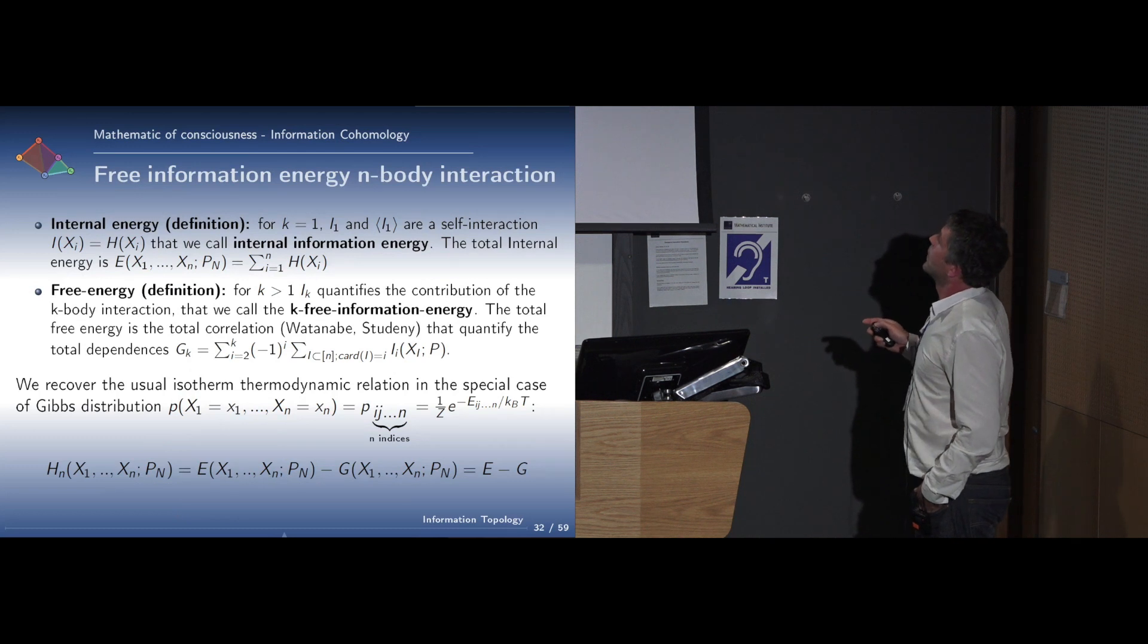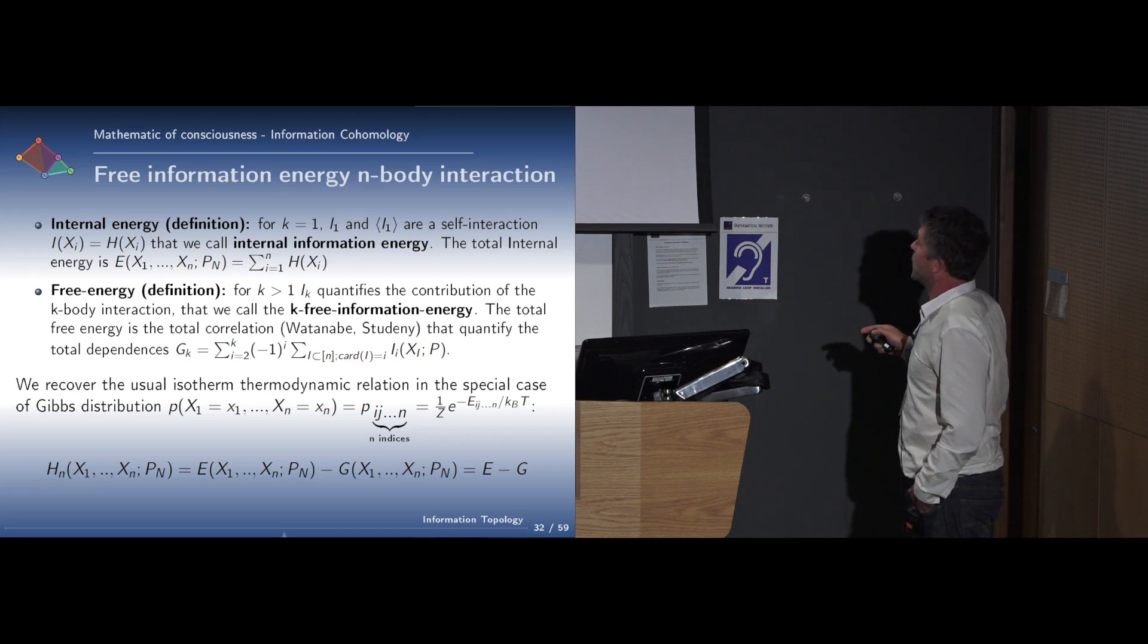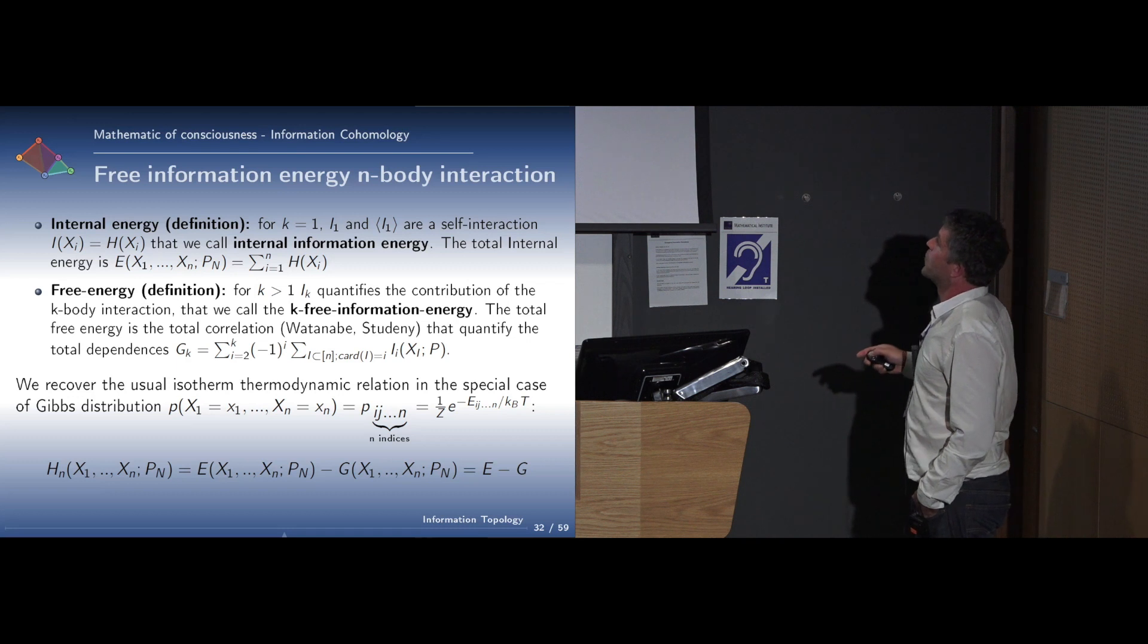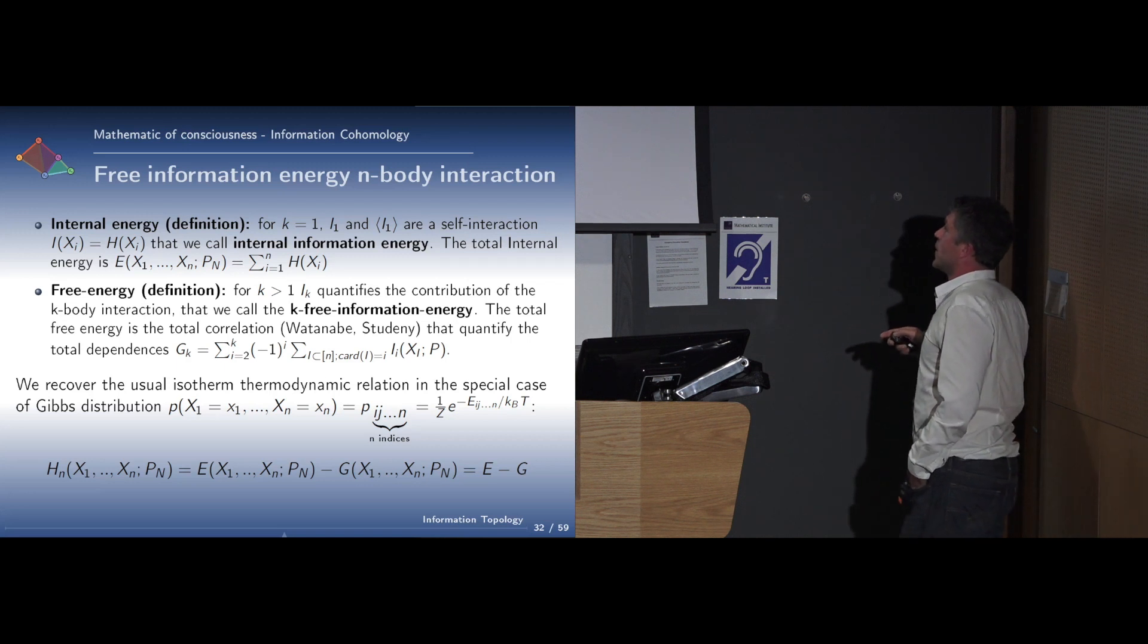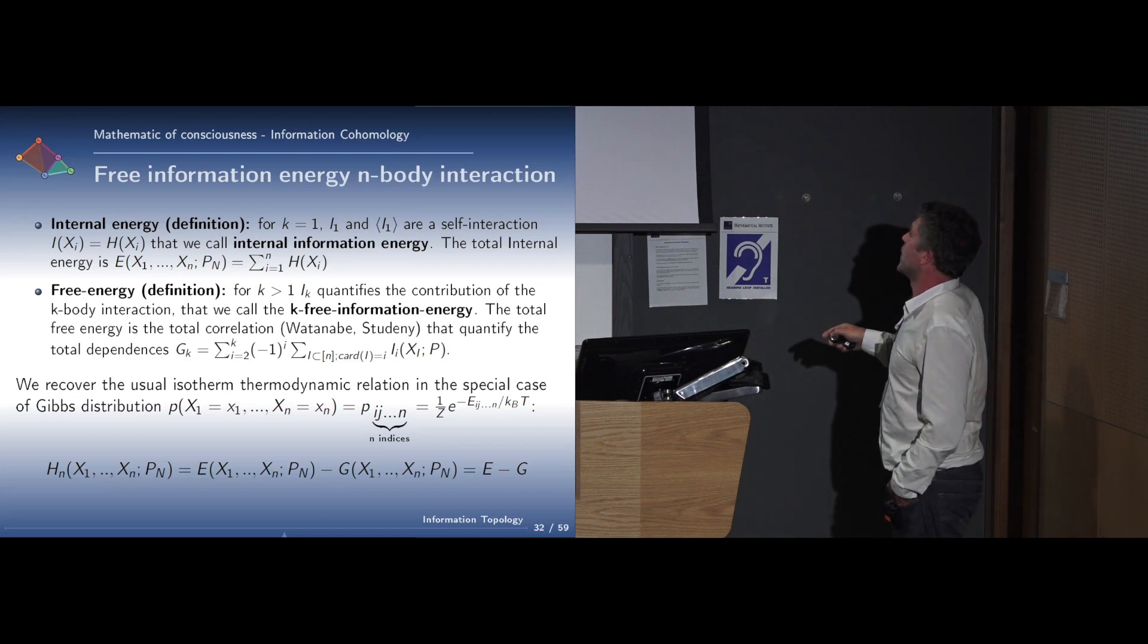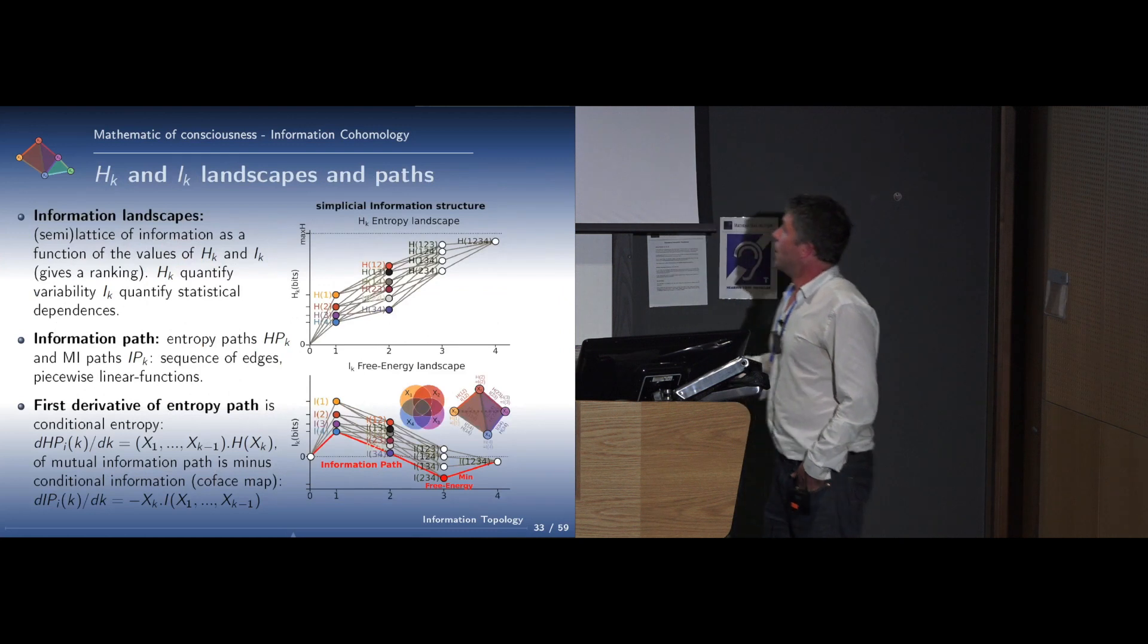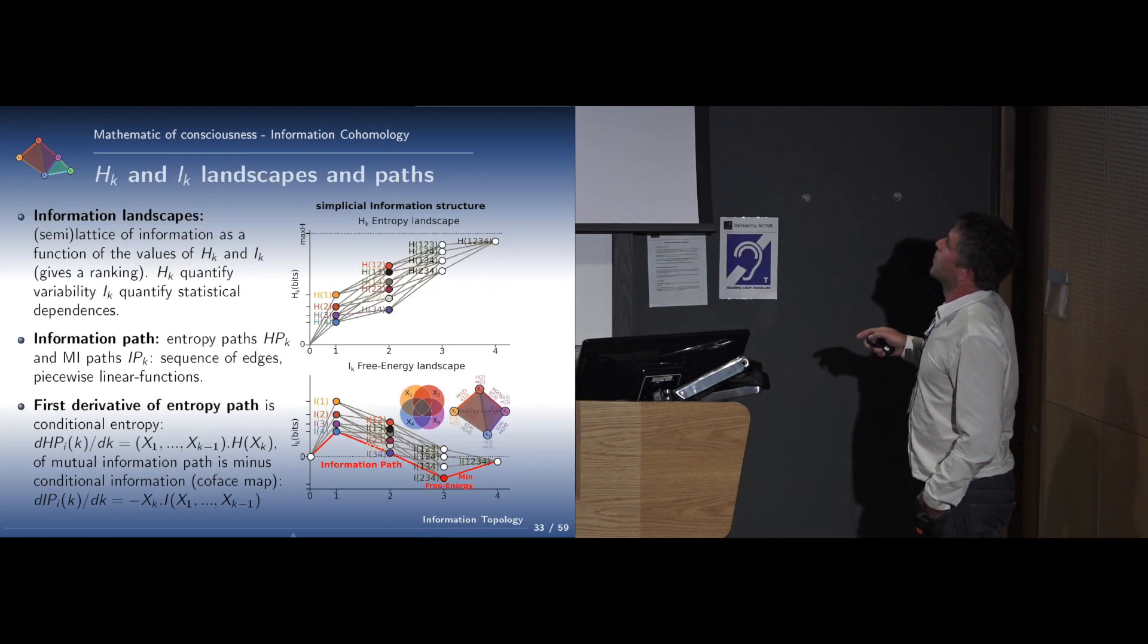We define the internal energy as the self-interaction, as the first order, the marginal, the entropy of the marginal. The mutual information at k quantifies the contribution of the k-body interaction, and we call it the k-free information. The total free energy is the total correlation or integrated information according to Tononi-Edelman, and quantifies the total dependencies. With this definition, we cover the usual thermodynamic stuff. In any case, we have the entropy which equals internal energy minus the free energy.